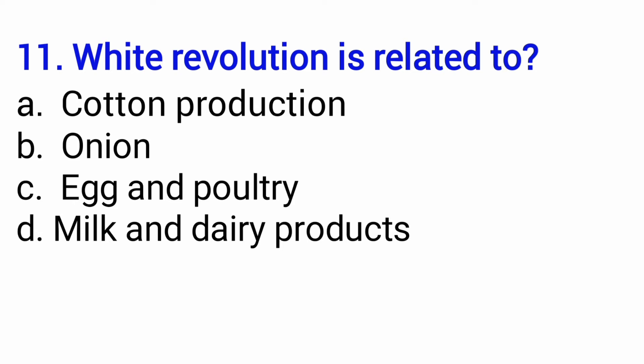White revolution is related to — safed kranti kisse sambandit hai? Is it cotton production, onion, egg or poultry, or milk and dairy product? Before you answer, keep in mind: although cotton is white and egg is also white, do not get confused. The right answer is option number D — milk or dairy product. Whether the option says milk, dairy product, or both, the answer is D.